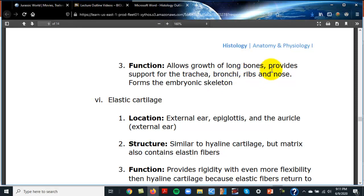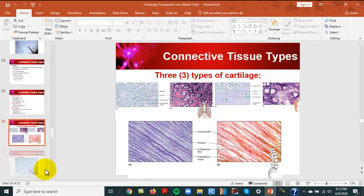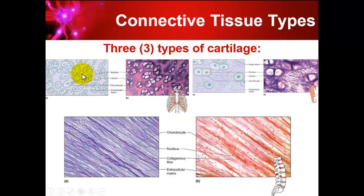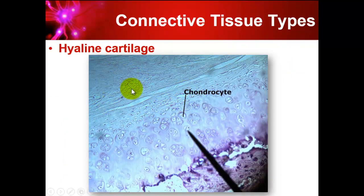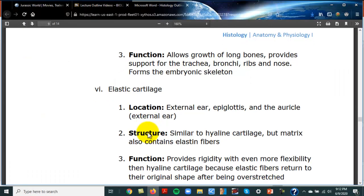The functions of hyaline cartilage include support for the trachea, bronchi, ribs, and nose, and forming the embryonic skeleton — baby bones prior to birth start out as hyaline cartilage. In the slide, the matrix often stains pinkish and the small dots are chondrocytes. The slide also shows elastic cartilage and fibrocartilage for comparison.